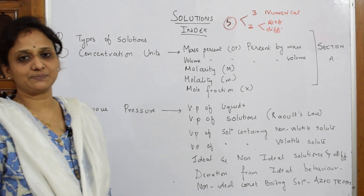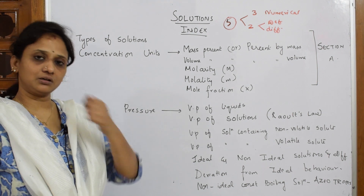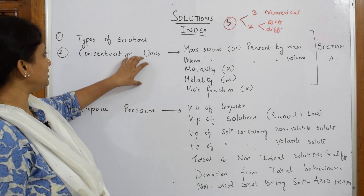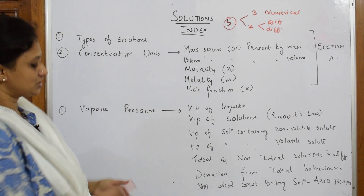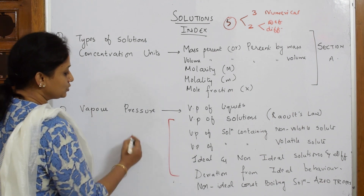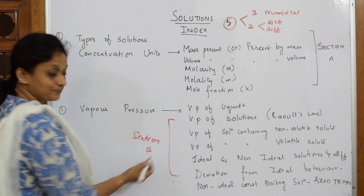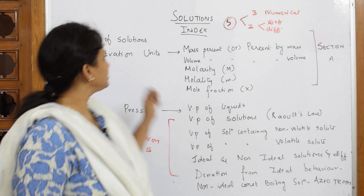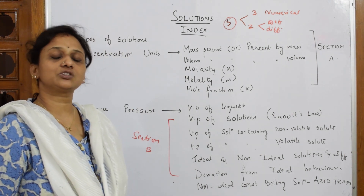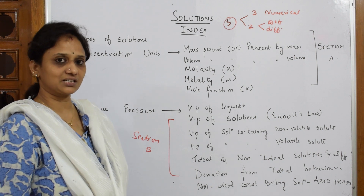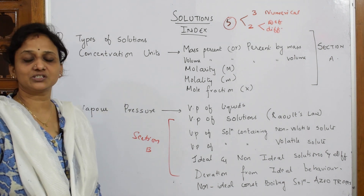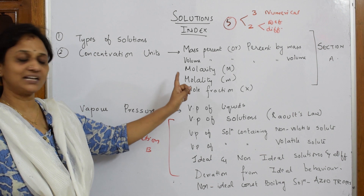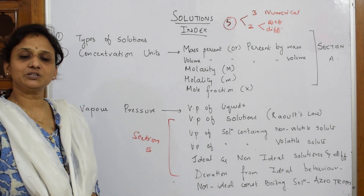Let me start with the index of the chapter. The whole chapter is divided into four subtopics — four categories. Section A and Section B, and also Section C and Section D. In Section A, we'll be studying basic definitions — types of solution, which is also common in surface chemistry — and then concentration units: how to measure concentration in terms of mass percentage, volume percentage, molarity, molality, mole fraction, and we'll also be doing numericals on normality.